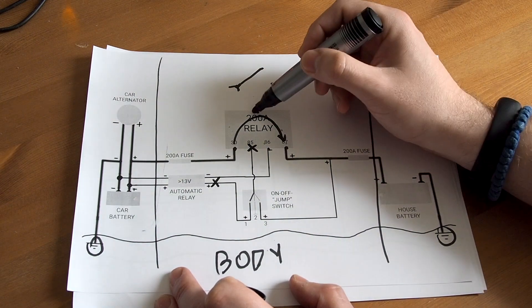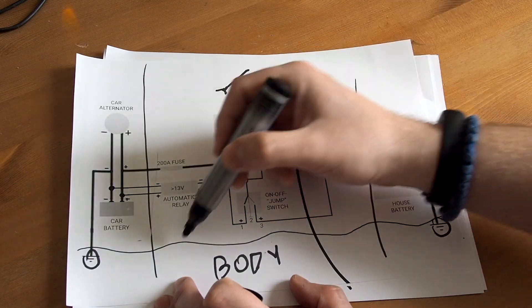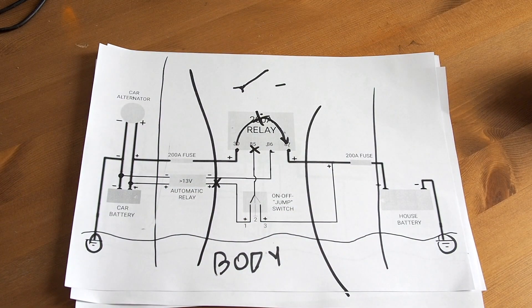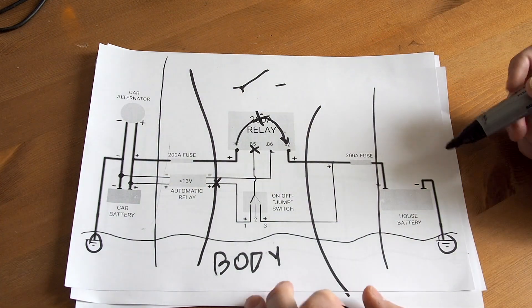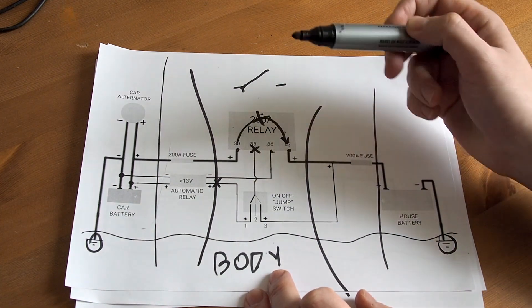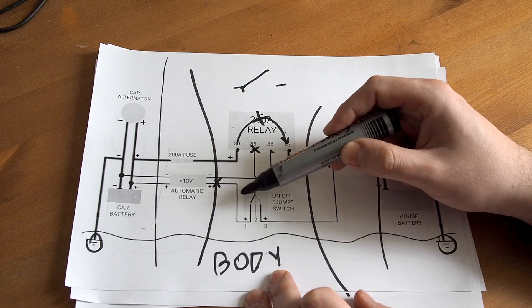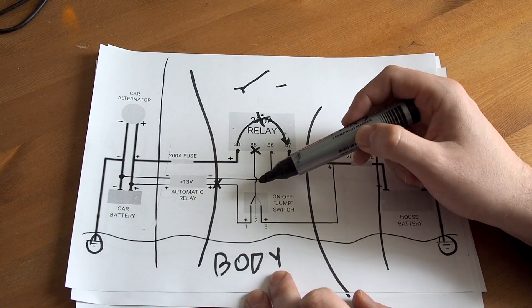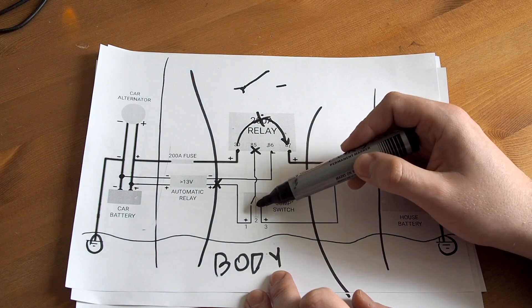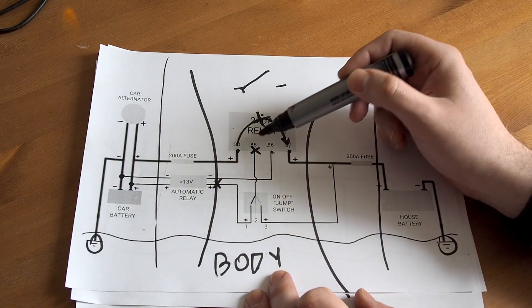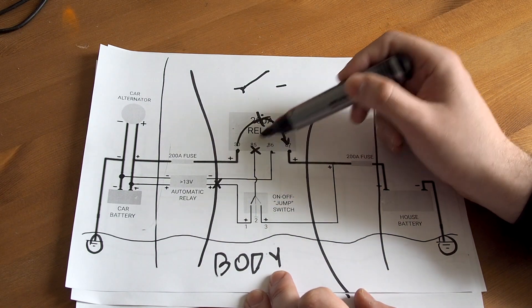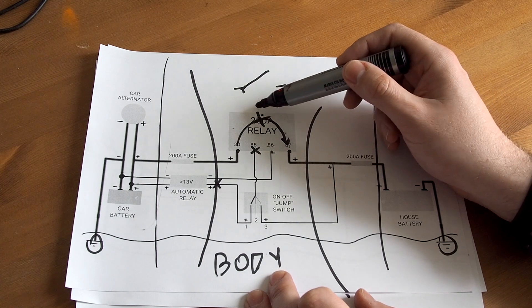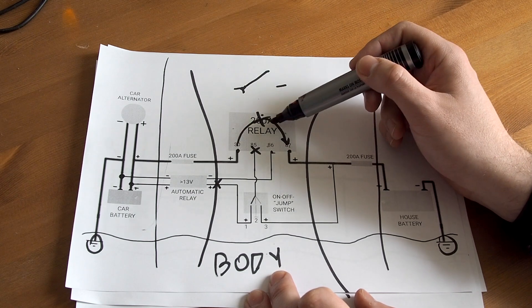It breaks the relay and your house and car system is insulated. Also I installed a switch, which has three modes. One of these is automatic, as described just now. The second one is off. It never sends any power to the relay, so it stays open every time.